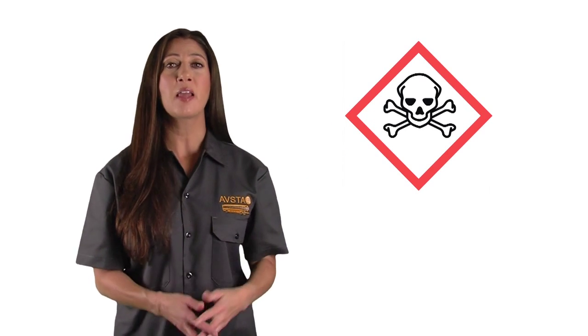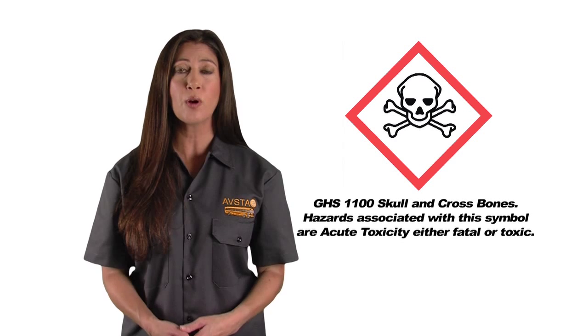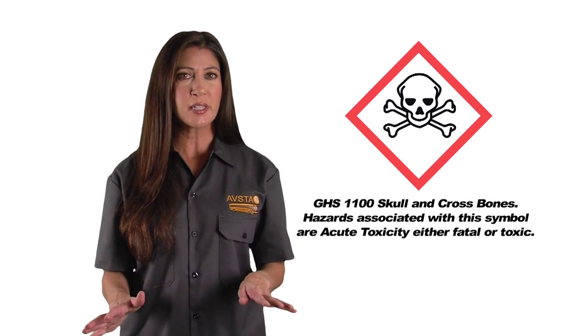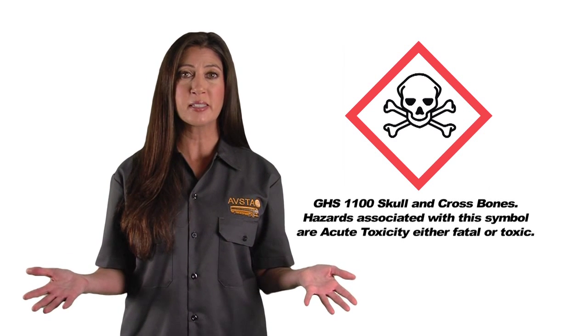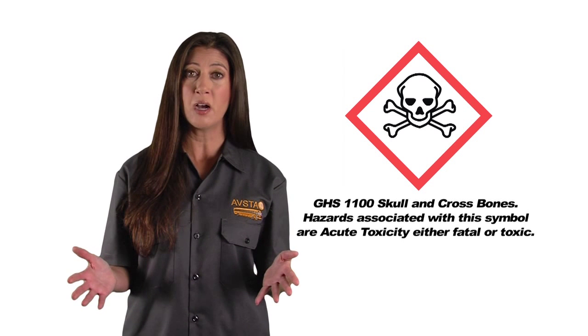Our first symbol is GHS 1100, skull and crossbones. Hazards associated with this symbol are acute toxicity, either fatal or toxic.